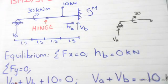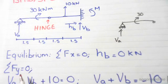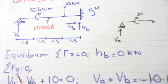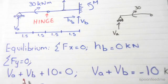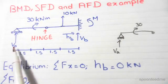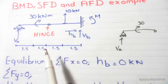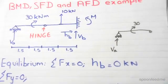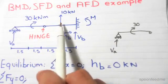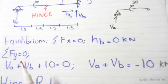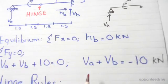Secondly, we do sum of forces in the vertical direction equals zero. We have Va plus Vb, which are our reaction forces here. Va plus Vb plus 10, because we have a point load pointing upwards, and this all equals zero. Rearranging, we find that Va plus Vb is equal to minus 10 kN.